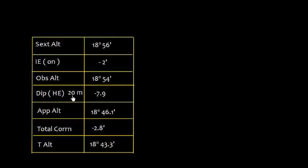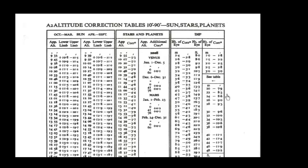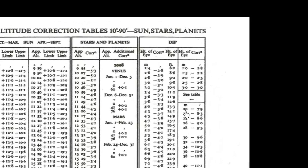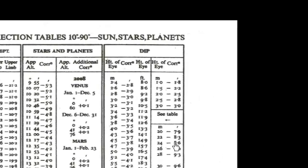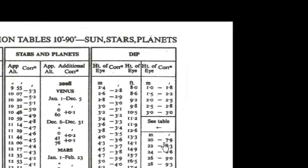Now dip, which is height of eye, which is given 20 meters, so I get minus 7.9'. Look at this almanac here: height of eye is 20 meters, so the correction is minus 7.9'.